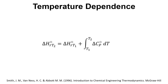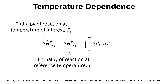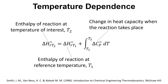In terms of temperature dependence, we have the equation: delta H of reaction at temperature T2 — the temperature of interest — depends on the enthalpy of reaction at the reference temperature T1, and then we need to do an integration with the heat capacity change when the reaction takes place.